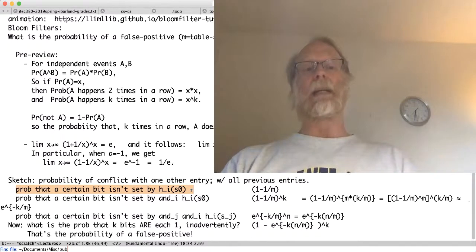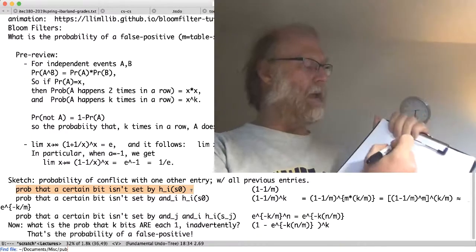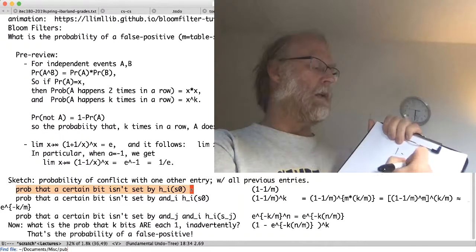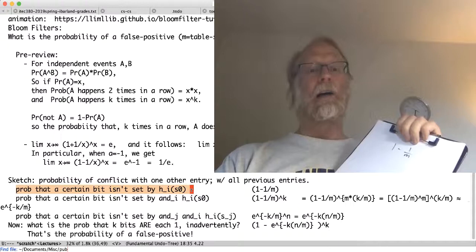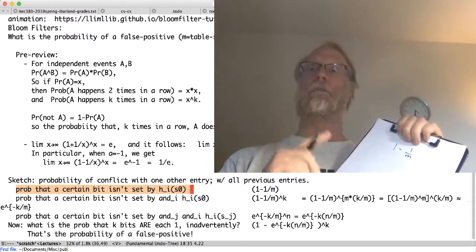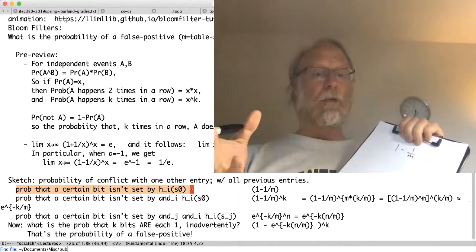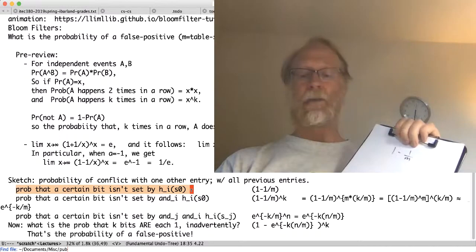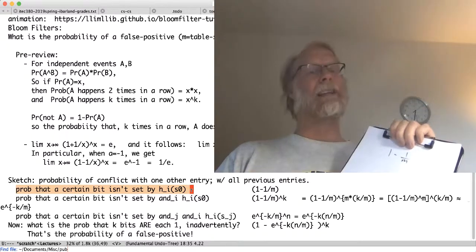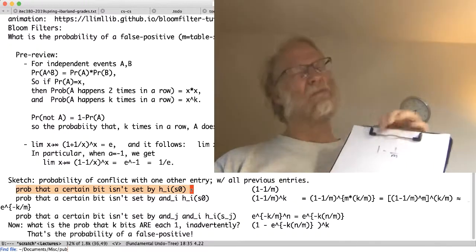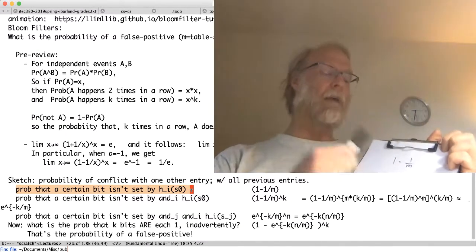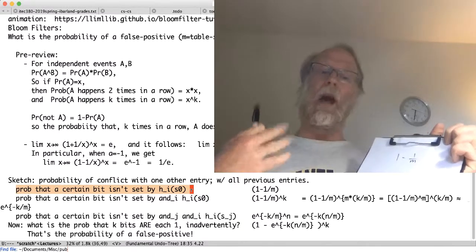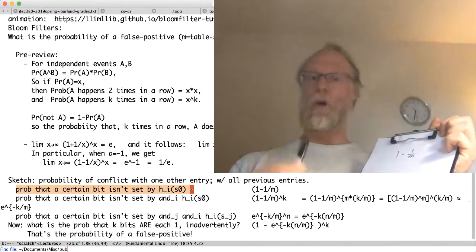Let's work through the numbers. Let's go back and start with a very simple thing. What is the probability that a certain bit isn't set by h1 of Ivarland? That's going to be pretty clear. There's m locations in the table. h1 of Ivarland set one of those bits, one out of m. We're going to assume uniformity here. Equally likely that h1 of Ivarland set any of the entries in the table. We're going to assume all our stuff is equally like. Our hash functions are good and independent. It may not be a realistic assumption, but close enough in practice.